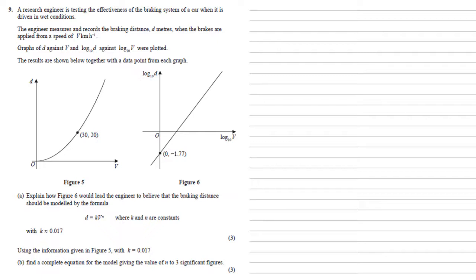Looking at figure six we've got a straight line graph. Remembering straight line graphs can be written in the form y equals mx plus c where m and c are constants, but our axes aren't x and y, they're log base 10 v and log base 10 d. We should be aiming for something of the form log base 10 d equals m log base 10 v plus c where m and c are constants.